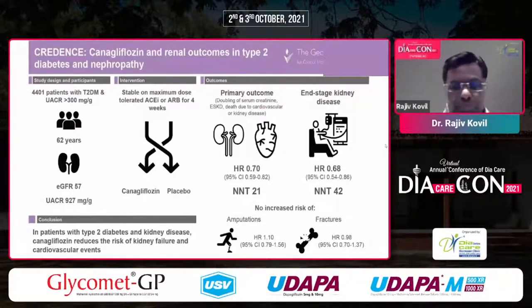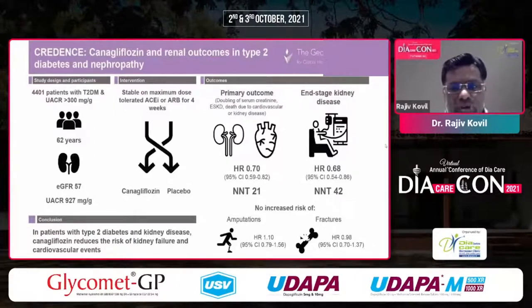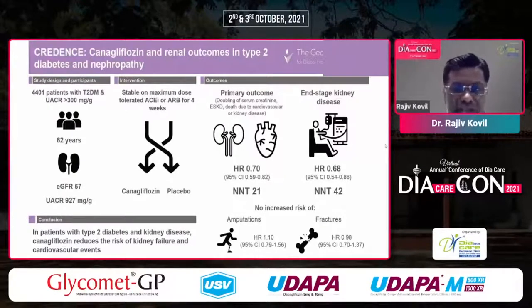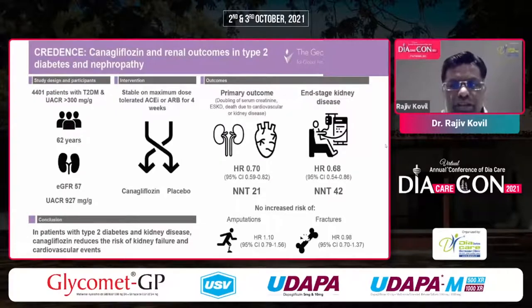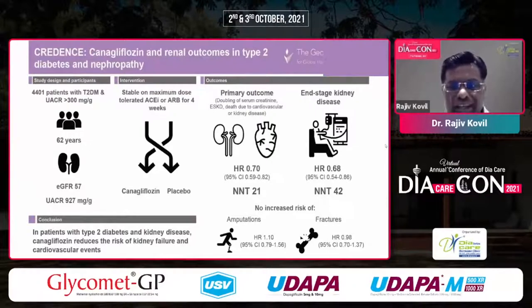In the CREDENCE study, patients had a UACR more than 300, eGFR of 57, and average ACR of approximately 1000. They were on ACE inhibitors and randomized to canagliflozin versus placebo; 90 to 95% of patients were on ACE or ARB doses stabilized based on blood pressure control. The primary outcome was doubling of creatinine, death due to cardiovascular or kidney disease, or end-stage renal failure. There was a 30% reduction in the primary outcome.